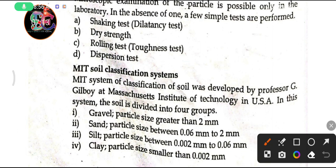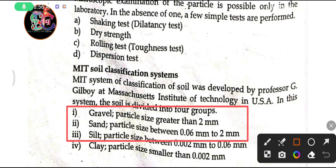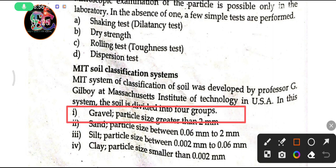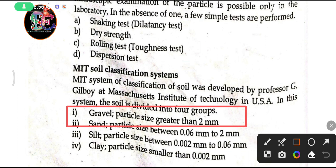In this system, the soil is divided into 4 groups. The first group is gravel, where the particle size is greater than 2 mm. Where the soil particle is greater than 2 mm, we classify it as gravel.